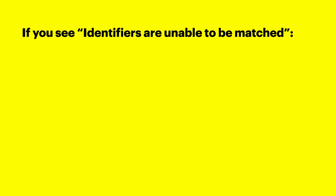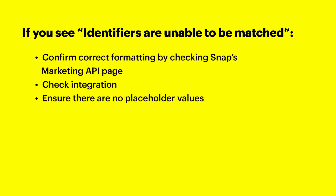If you see the identifiers sent are unable to be matched to any Snapchatter, then very few of your identifiers are actually matching. You want to confirm that the data is formatted properly. Please reference Snap's marketing API page for more information on how to format and normalize parameters. Additionally, check your integration to ensure that you're passing valid identifiers and not passing placeholder values such as null, test at test.com, or zero.